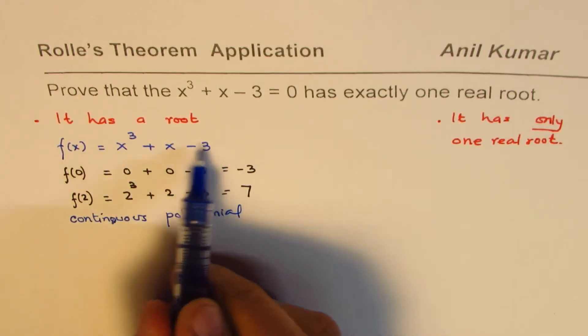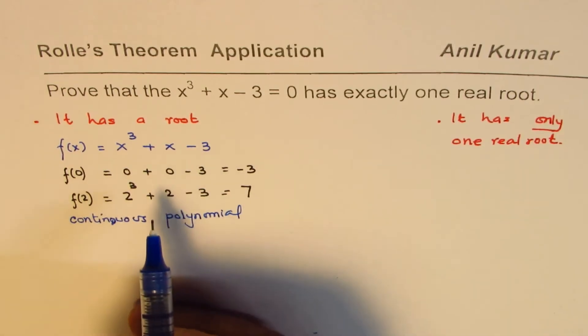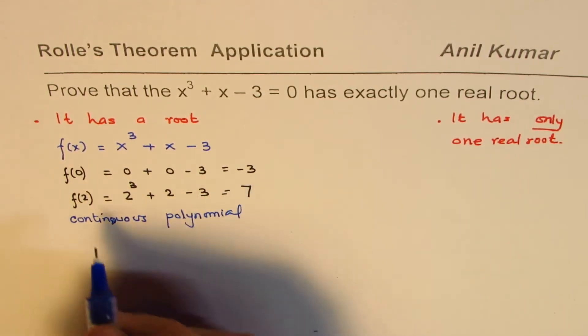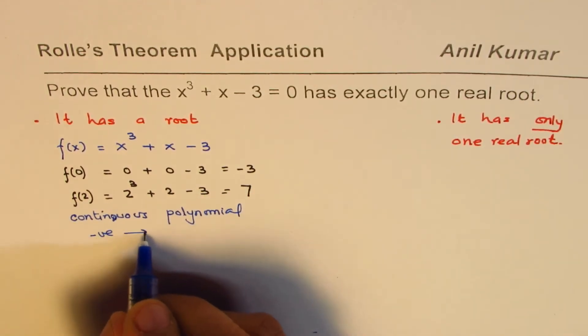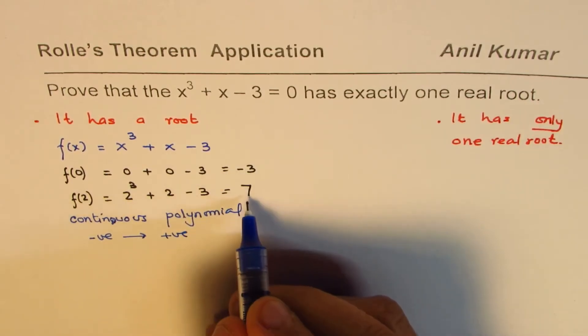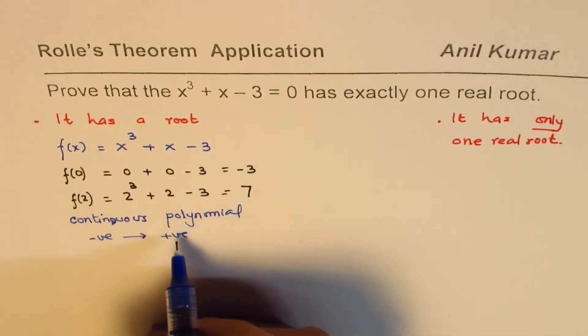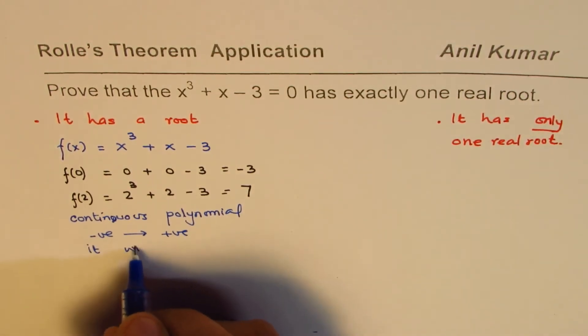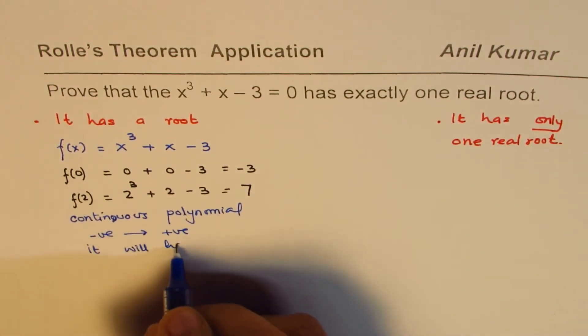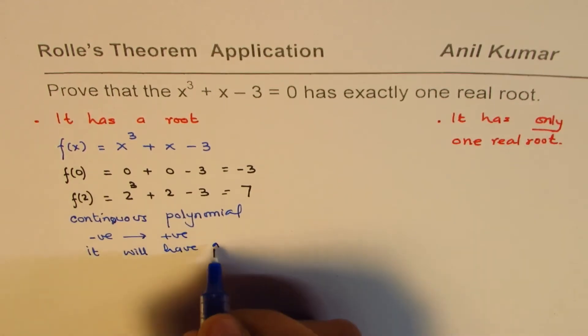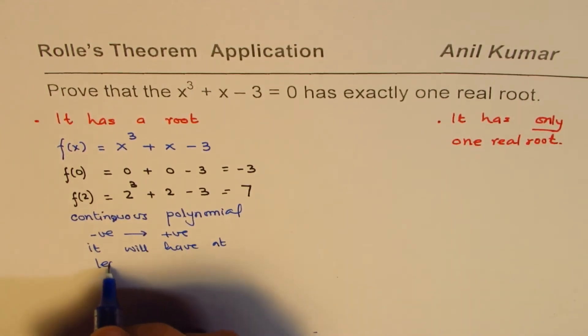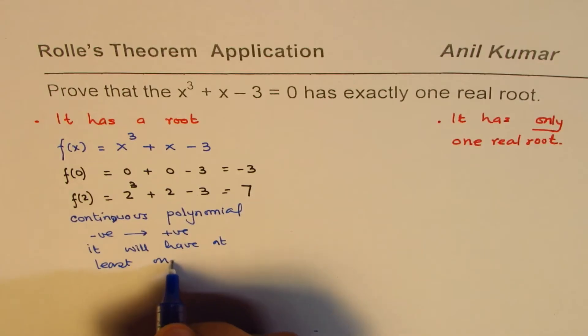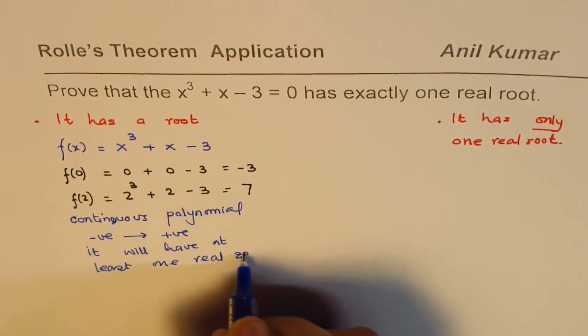So as we see, this is a continuous polynomial, and if the value is changing from negative to positive, minus 3 to 7, it will go through origin. So that means it will have at least one real zero.